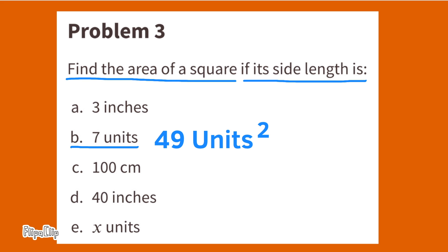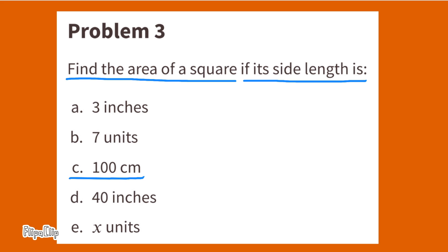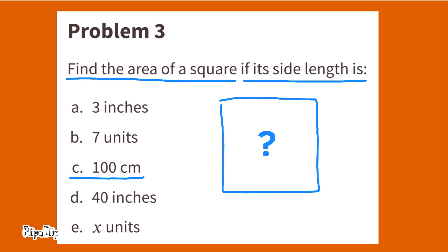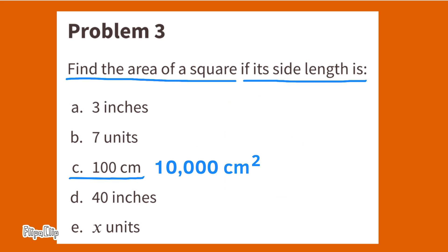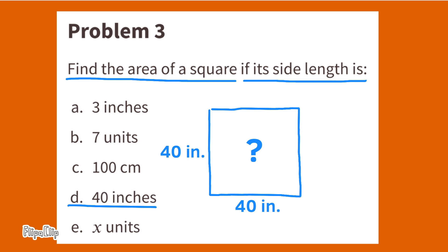Find the area of a square if its side length is 100 centimeters. A side length of 100 centimeters times 100 centimeters equals 10,000 centimeters squared. Find the area of a square if its side length is 40 inches. A 40-inch side length times a 40-inch side length equals 1,600 square inches.